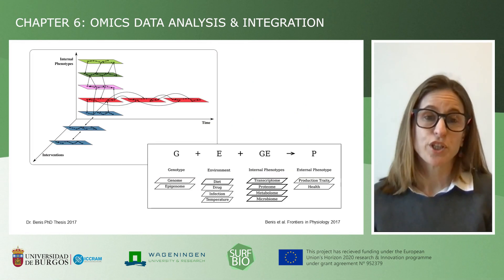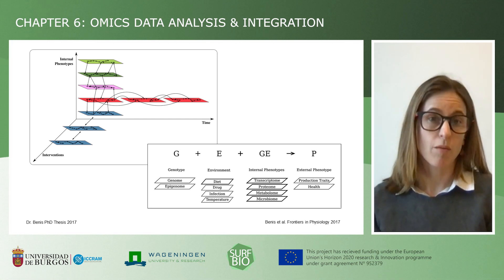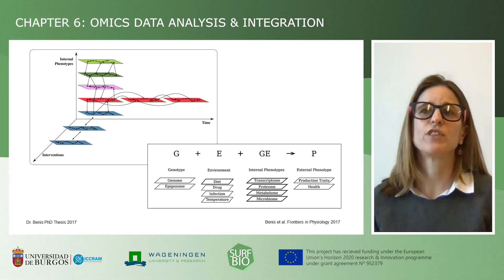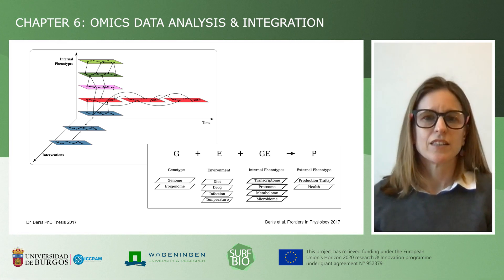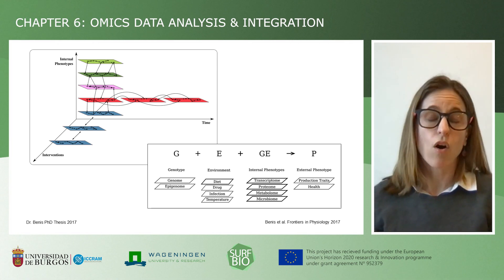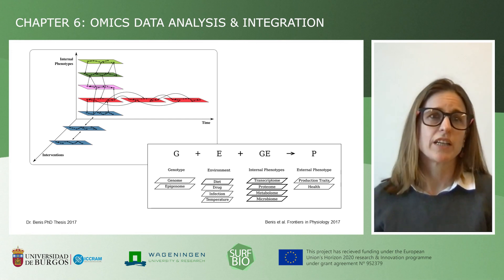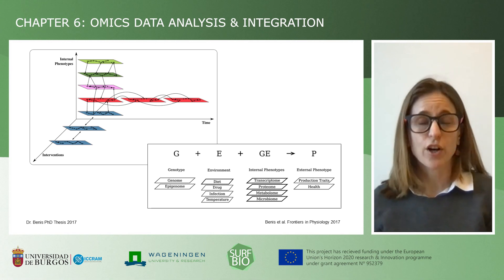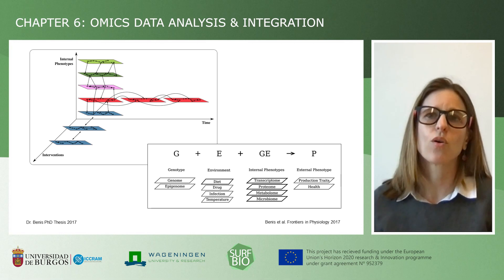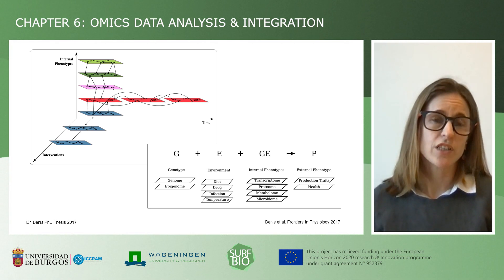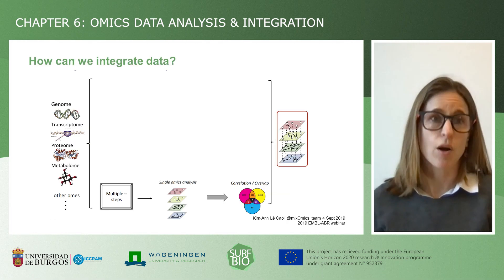The final picture of data available nowadays is more complex. We can have different interventions on different phenotypes, collecting different types of variables, measurements, and all of these at different time points. Our aim is to link the genotype and environment measurements to the observed phenotype in terms of production traits or implications for health, and we do this through the measurement of the different internal variables — the different omics.